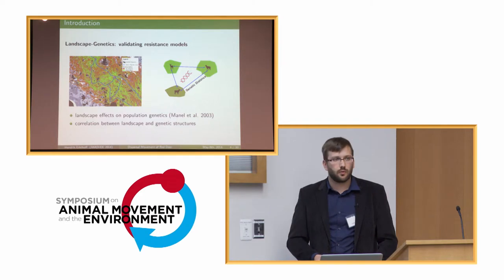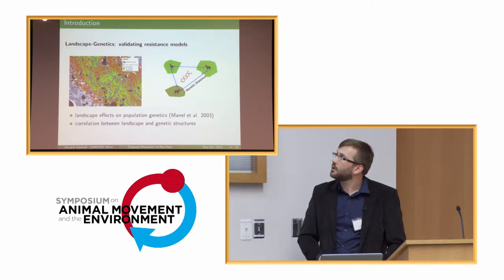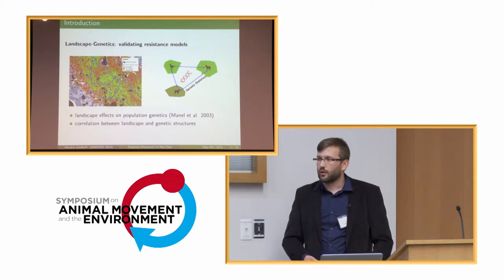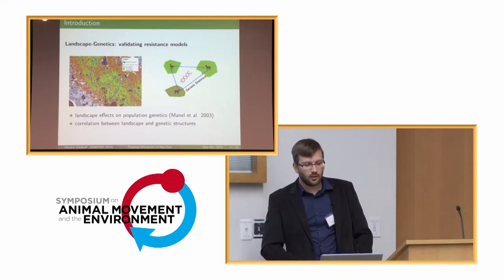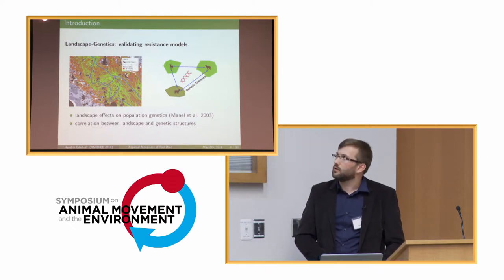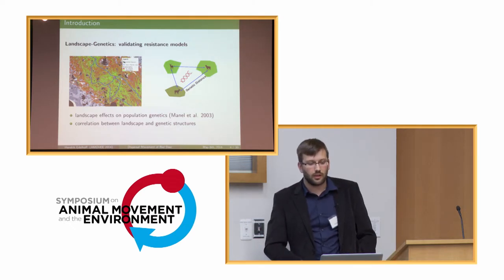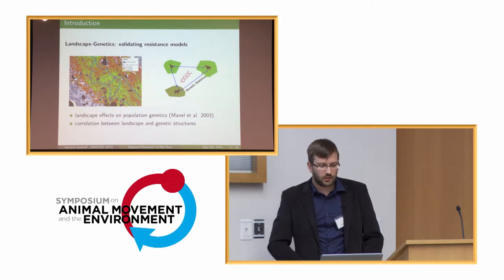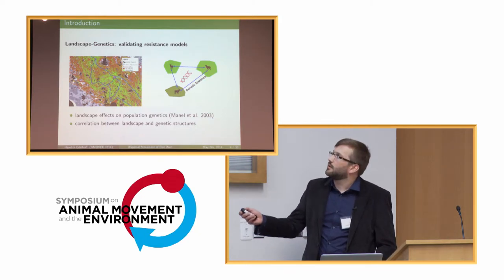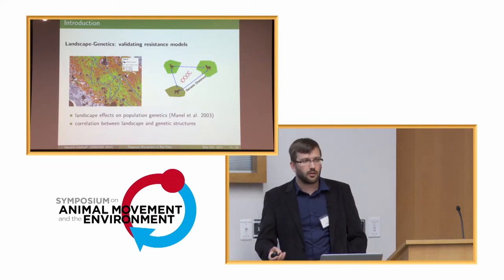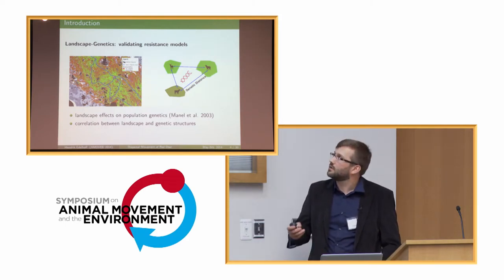Suppose we try to hold different options for modeling landscape resistance and end up with a whole bunch of models — how do we know that a given model really represents functional connectivity? This is where landscape genetics come in handy, which is basically a correlation of landscape effects with population genetics, finding correlations between landscape structures and genetic structures. We use our resistance surface to look at effective distances between populations and correlate those with genetic distances from samples in the same region.